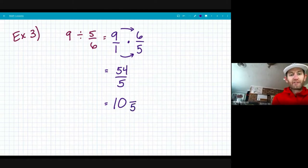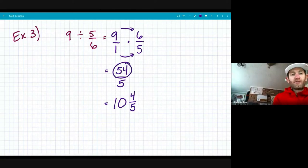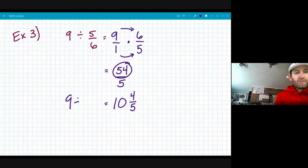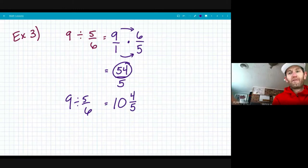My denominator is going to stay the same. I'm going to say, alright, 10 times five is 50. 50 plus what is going to get me 54? In this case, it's four. So nine divided by five sixths equals 10 and four fifths. On to the last example here.